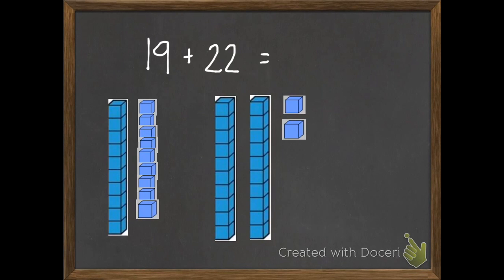What I can do is I can take one of my blocks from the 22, subtract it from there, and add it onto my other side. Now, if I add one to 19 and subtract one from the 22, I have 20 plus 21, which is a lot easier to do mentally just by moving that one block from one to the other.